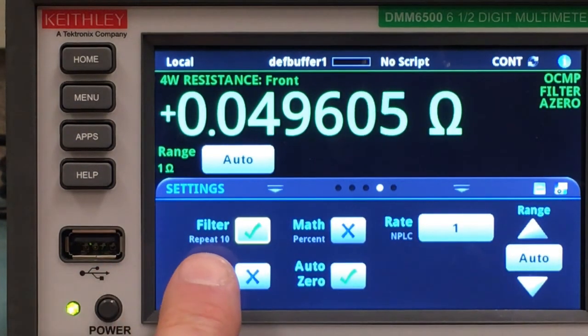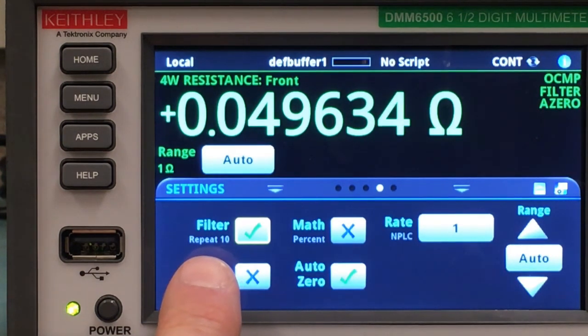You might be able to see in the text down here that we have a 10-sample filter applied. It's a repeating filter, so it will capture 10 readings and then give you an update.